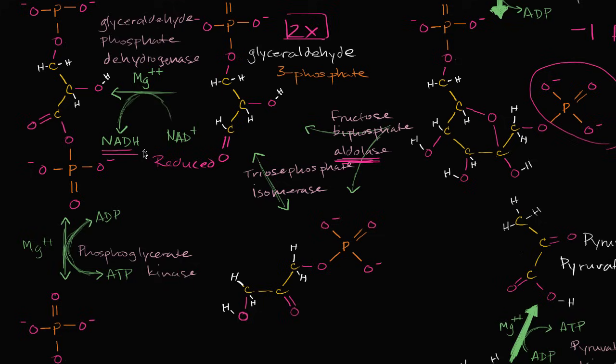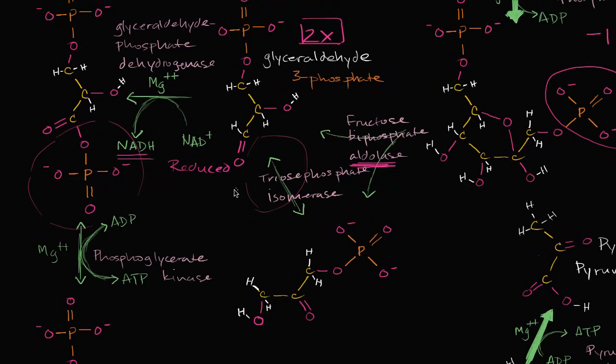And this can be used, this NADH later on can be used in the electron transport chain to potentially produce some more ATP. But in that process, we also add another phosphate group to the glyceraldehyde 3-phosphate.